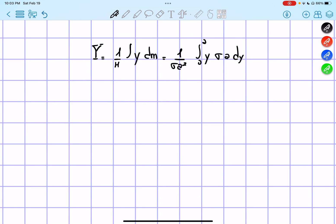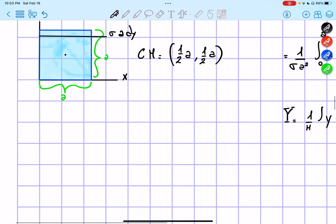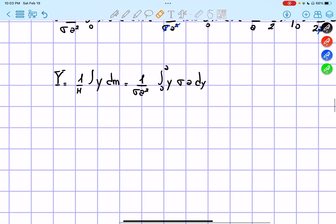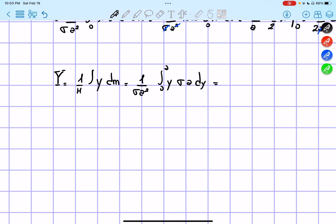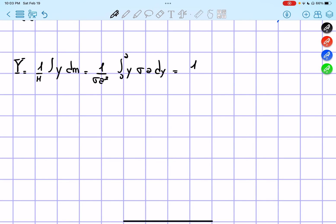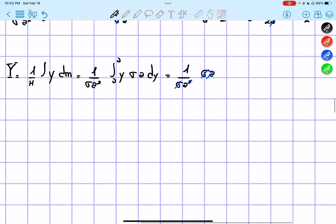From 0 to a, because, as you can see, we go from the point over here, 0, all the way up to a. So, we're going to get, again, take the omega a out, so we're going to get 1 over omega a squared times omega a, simplify this part, and then the integral of y from 0 to a dy.